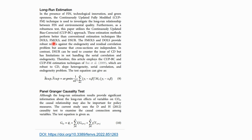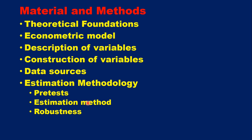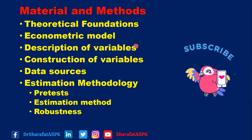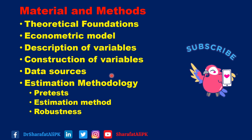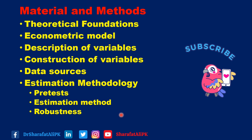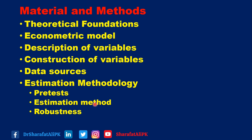Moreover, the authors have also provided the description of long-run estimations and panel co-integration causality tests. In summary, the researcher should divide the materials and methods section into subsections. The author should provide the theoretical foundations of the model developed, and detail of the econometric models used is also fundamental. The researcher should describe how the variables were constructed, provide data source descriptions, and most importantly, detail the estimation methodology including what pre-tests were applied, what estimation methods were used, and how robustness of the estimated models was checked.